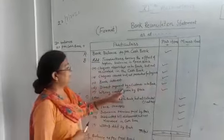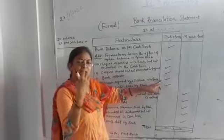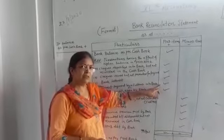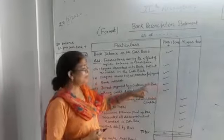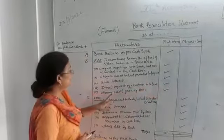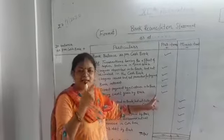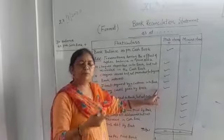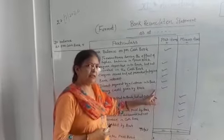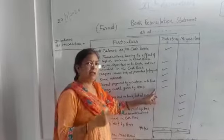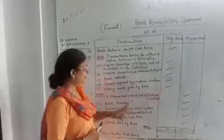Direct payment by customer into bank — a customer deposited money directly into the bank, so you need to add it in the cash book too. Wrong credit given by bank — the bank added it to the passbook by mistake, so we need to add it in the cash book as well — add it to reach the passbook.